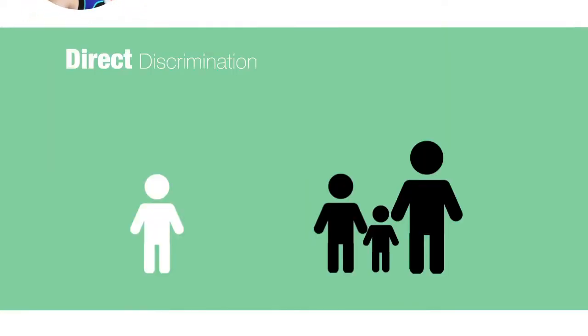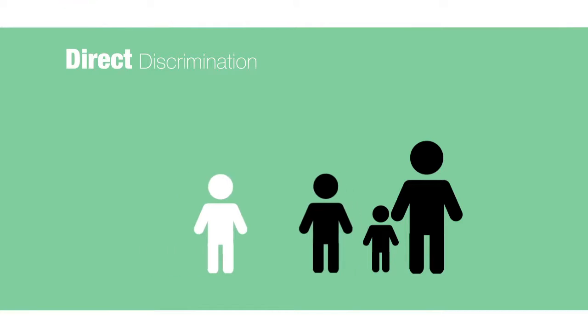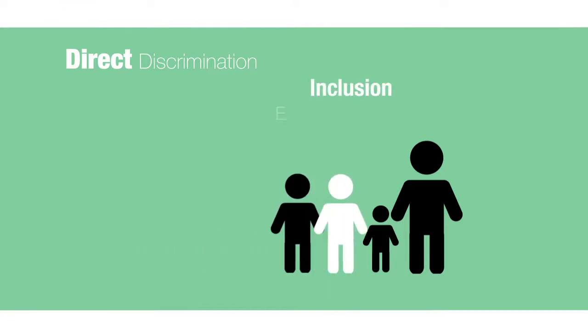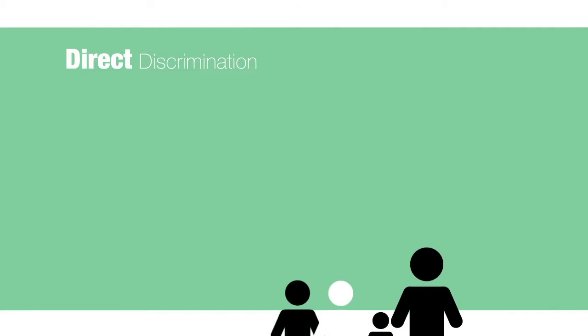Direct discrimination is fairly straightforward. You treat someone less favourably because of a certain characteristic, for example a disability, gender, race, or religion.